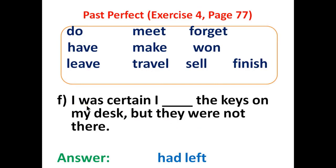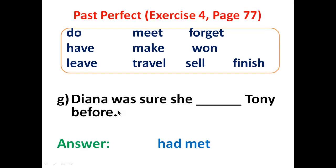Number F: 'I was certain I had left the keys on my desk, but they weren't there.' 'Had left' is the answer — 'left' is the past participle of the verb 'leave'. Number G: 'Diana was sure she had met Tony before.'